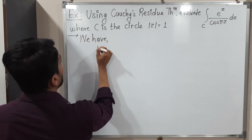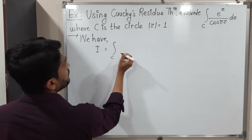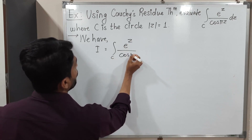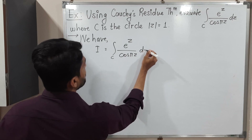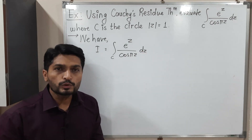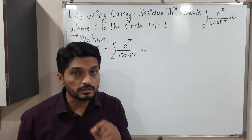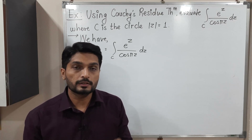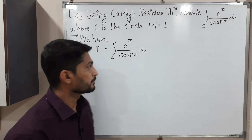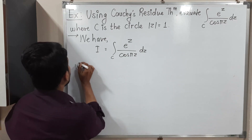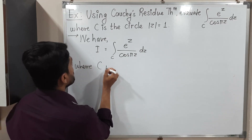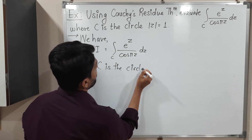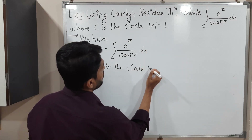We have I equal to the integration over C of e raised to Z upon cos(πZ) dz. The most important thing here is the curve C. So let us draw that curve first, then we will discuss the function, where C is the circle mod Z equals 1.